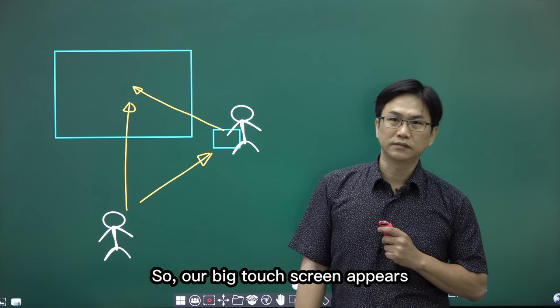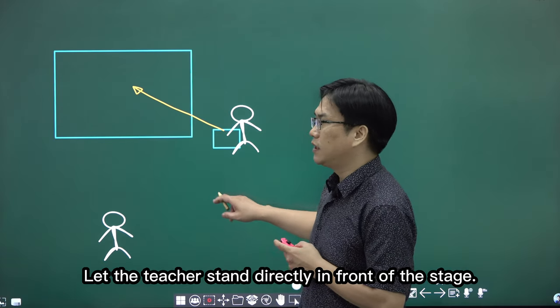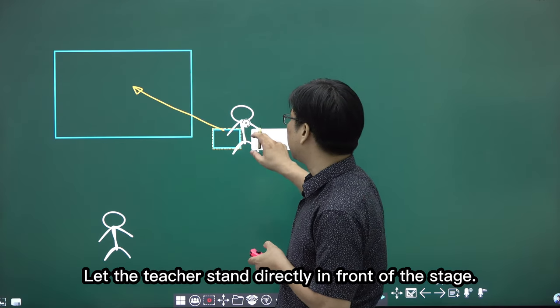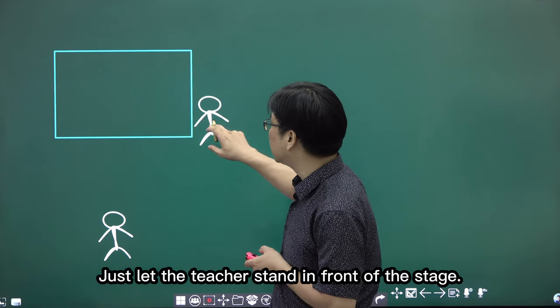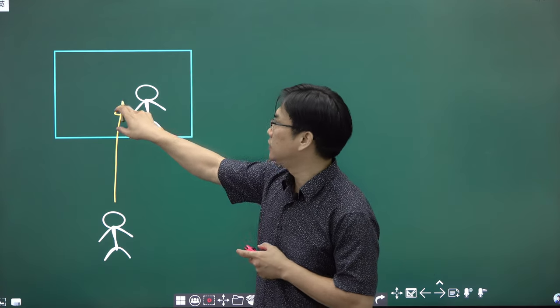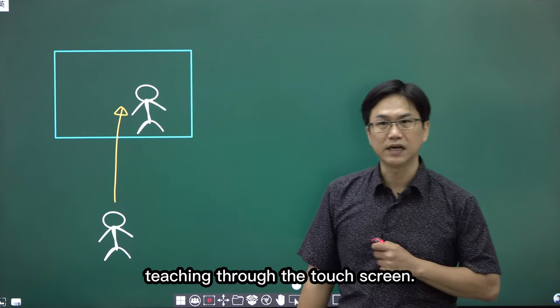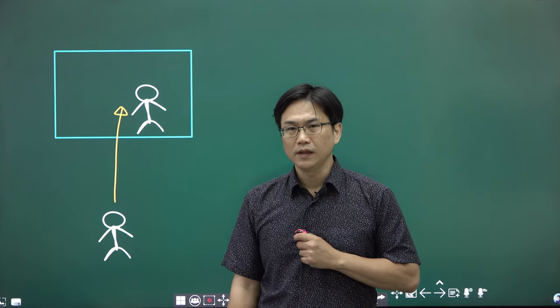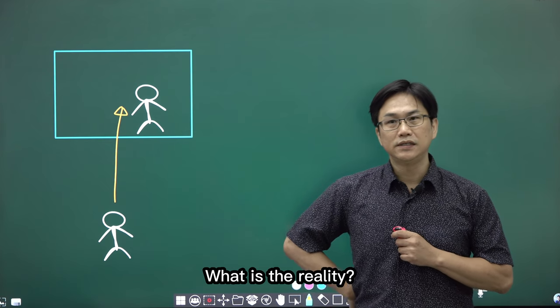So our big touch screen appears. Let the teacher stand directly in front of the stage. The child looked directly at the teacher, teaching through the touch screen. But this is the ideal situation.